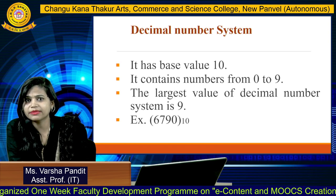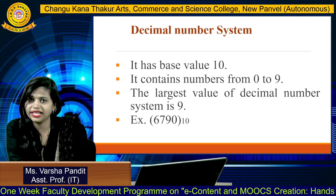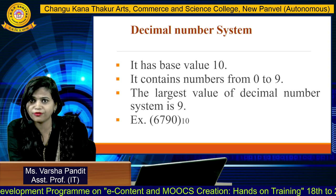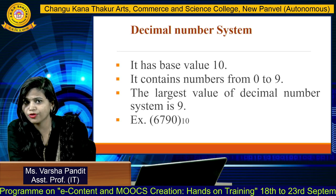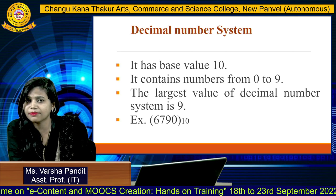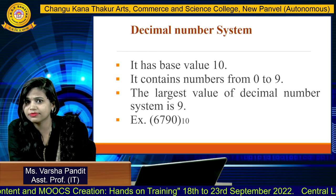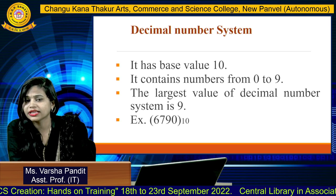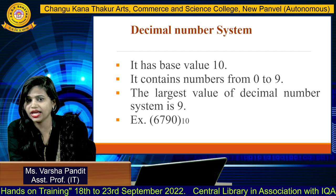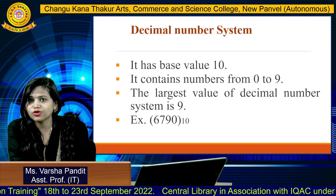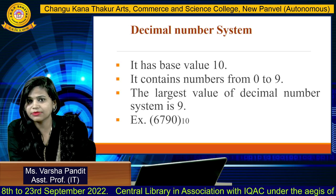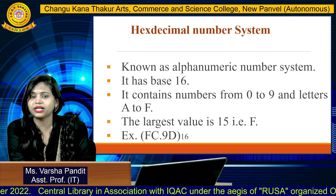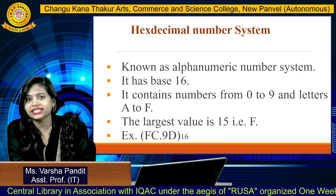The next number system is the decimal number system. As mentioned earlier, this is the number system we use in our day-to-day life. It has a base value of 10, containing numbers from 0 to 9, and the largest value is 9. An example is 6790 base 10. The three-digit largest decimal value would be 999.